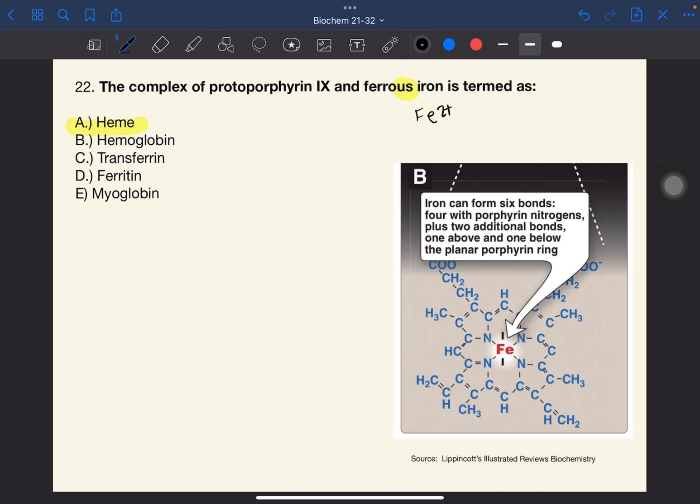As mentioned in the previous question, heme is the prosthetic group for heme proteins. As you can see in the picture below, the iron is in the center of the heme molecule and bonded to the four nitrogens of the porphyrin ring. The heme iron can form two additional bonds, one on each side. This binds to histidine and this is where oxygen binds to. That's why we say hemoglobin and myoglobin are oxygen carriers.